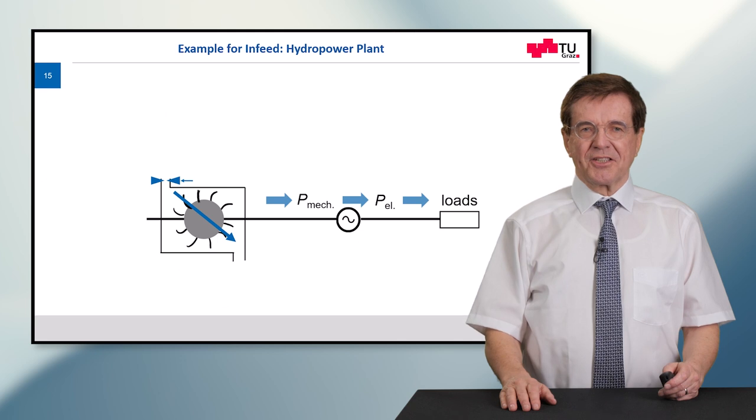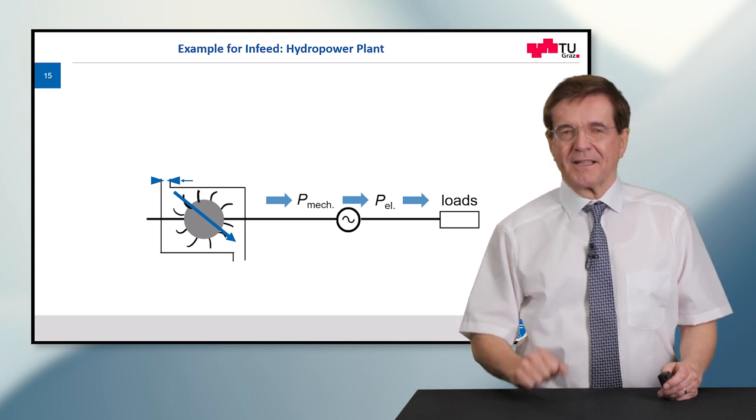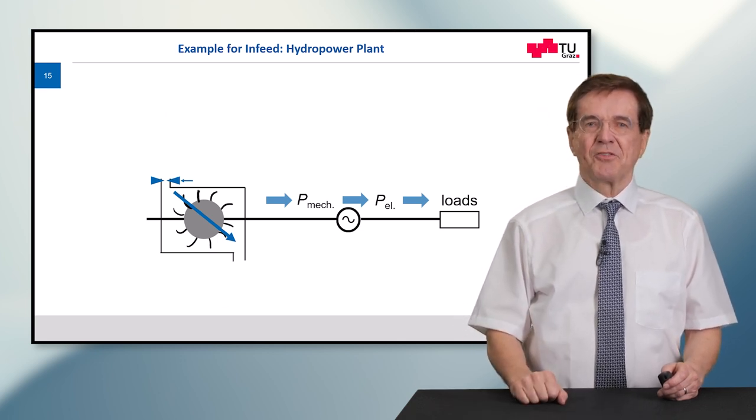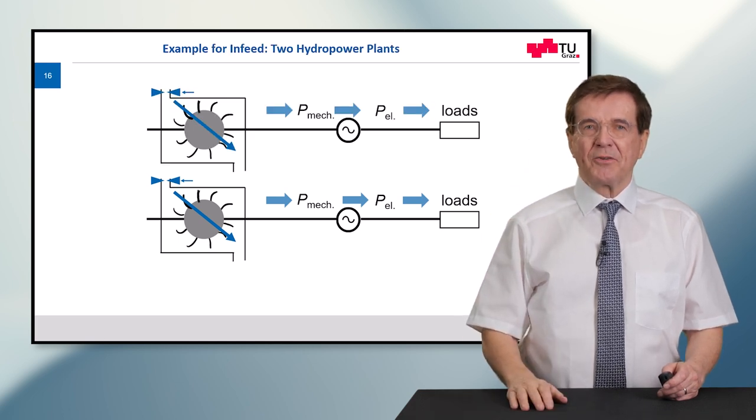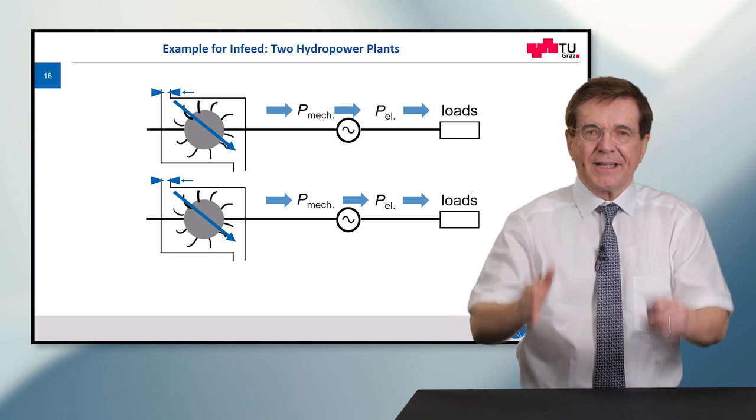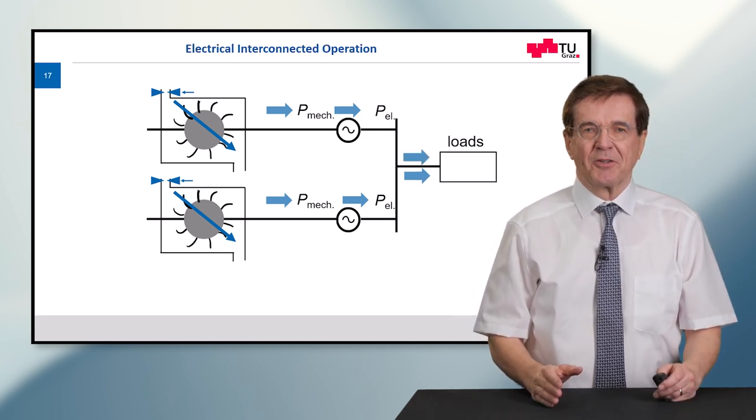Now these are the essentials of the mechanical and electric circuit. Let's assume we have a second power plant which is just somewhere else. Now we do an important step forward. We connect these two to interconnected operation by feeding on one point of common connection, and from there the power goes onto the loads.